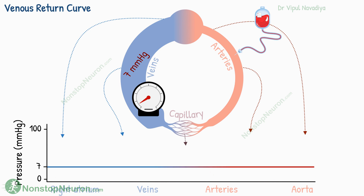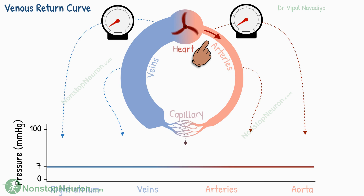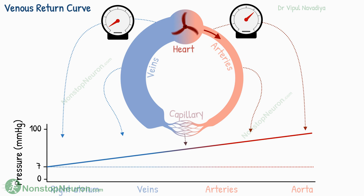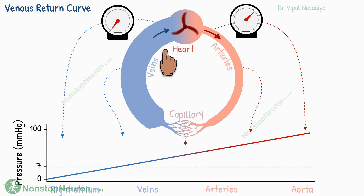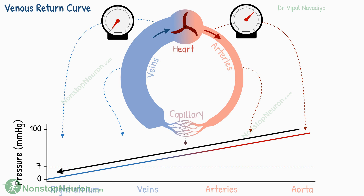Filling the blood vessels produces a pressure of about 7 mmHg, which is uniform throughout the circuit. Now we fit a pump here that represents the heart. The pumping activity pushes blood to the artery side, increasing pressure there. At the same time, pulling blood from the venous side decreases pressure in that area. Thus, a pressure gradient is created from arteries to veins, which drives blood flow along the circuit. The greater the speed of the pump, the greater the gradient, and the greater the flow.